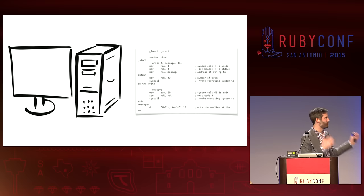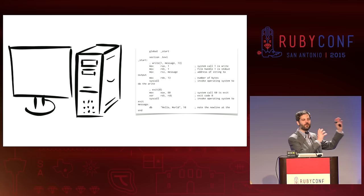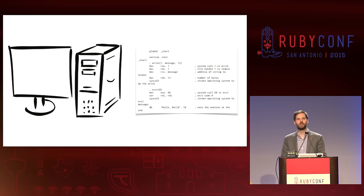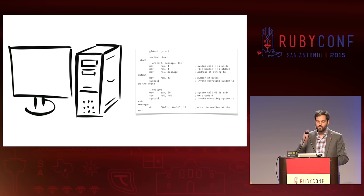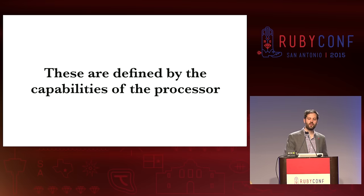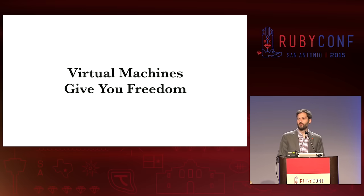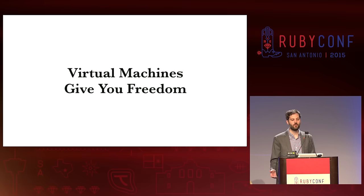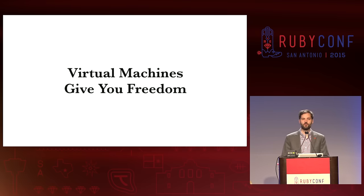We have a computer — a real machine with real code. It's got some assembly language. These instructions are actually defined by the chip that's inside the machine itself. We have real instructions and this chip defines those. The capabilities of this assembly language are defined by the capabilities of the processor. What's interesting about virtual machines is that they give us freedom — because they're essentially imaginary. We're making these up. They're virtual. We implement these machines in software, and these machines can have any instructions that we want them to have.